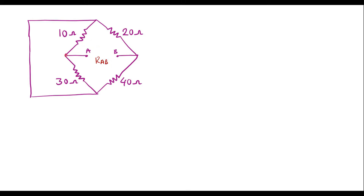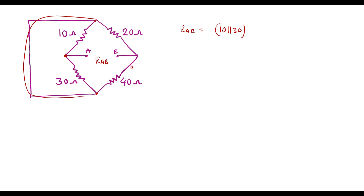Here we can see that this point is connected to A. This point and this point are both the same. Now we can see that 10 ohm and 30 ohm are in parallel. Similarly, 20 ohm and 40 ohm are in parallel. Both combinations are in series.